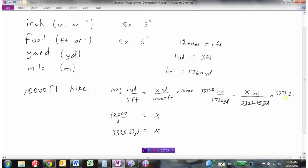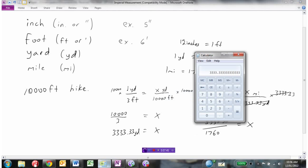x equals 3,333.33 times 1, which is 3,333.33 divided by 1,760. I'm just going to take that answer and divide it by 1,760, and I get about 1.9 miles, rounding to the nearest tenth.